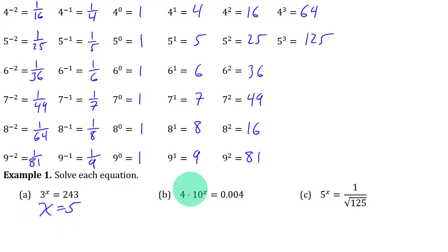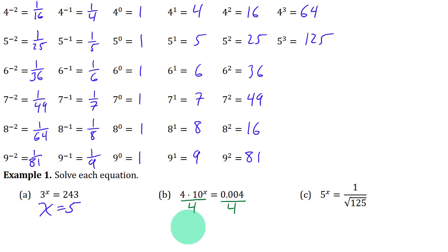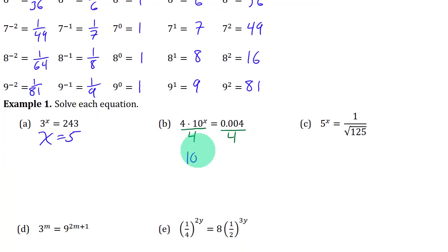This one's a little bit more complicated because we have multiplication in addition to just the exponent. It's not just 10 to the x equals a number — we also have the times 4. So to undo that, you can do the thing you normally do to undo multiplication and just divide both sides by 4. That's going to give you 10 to the power x equals 0.001.